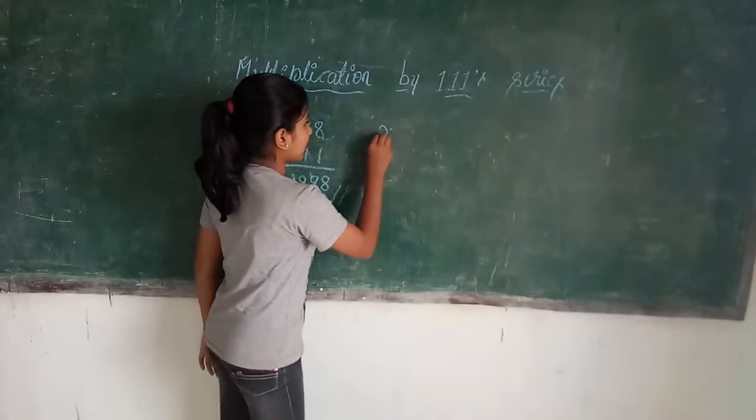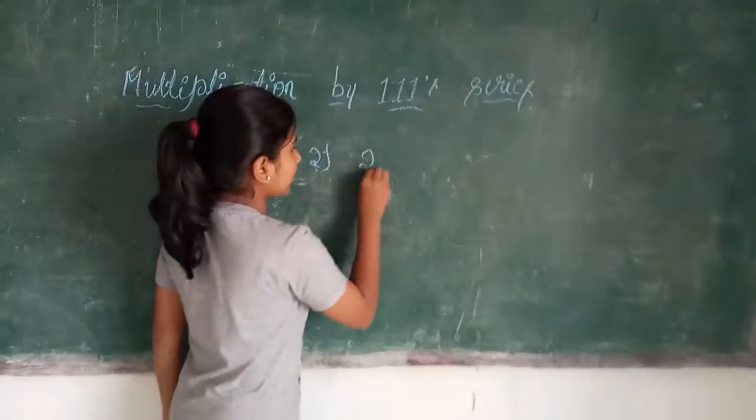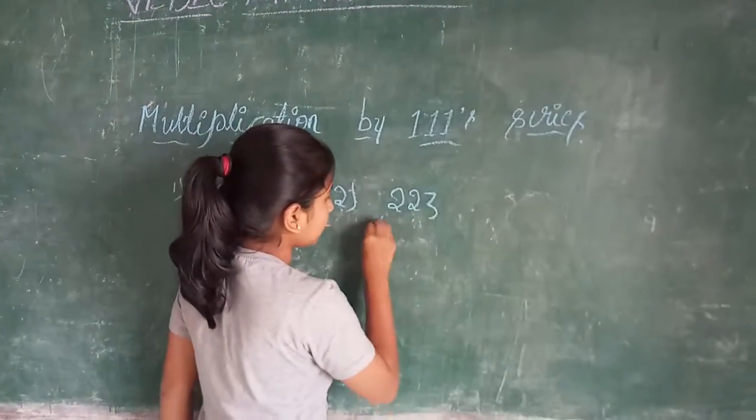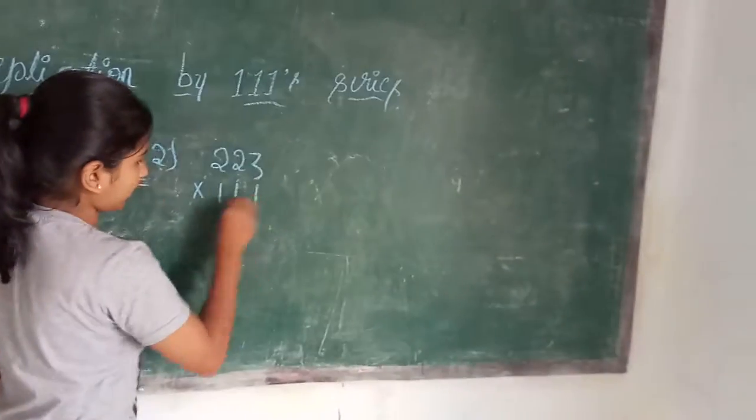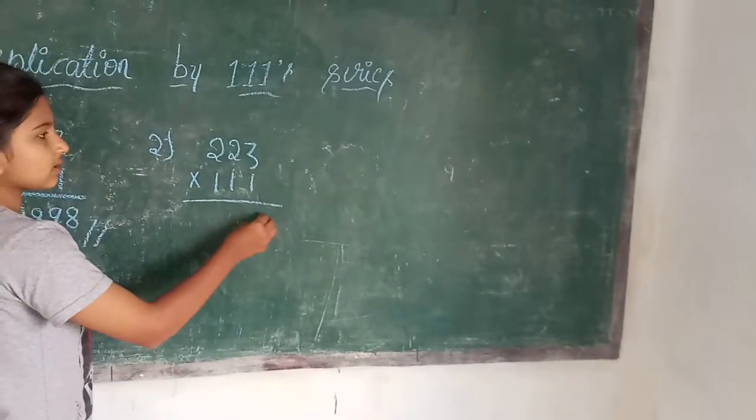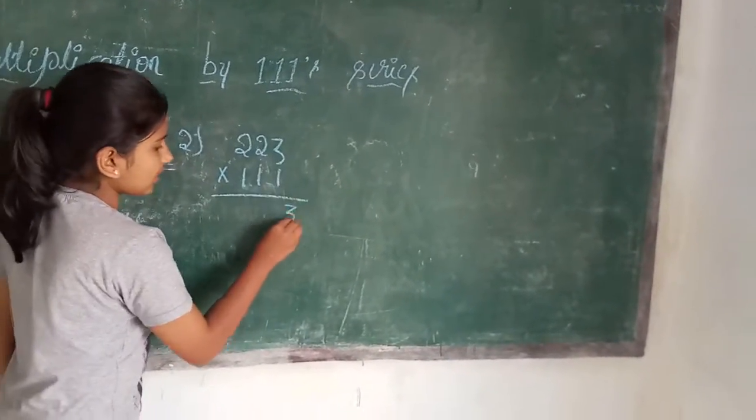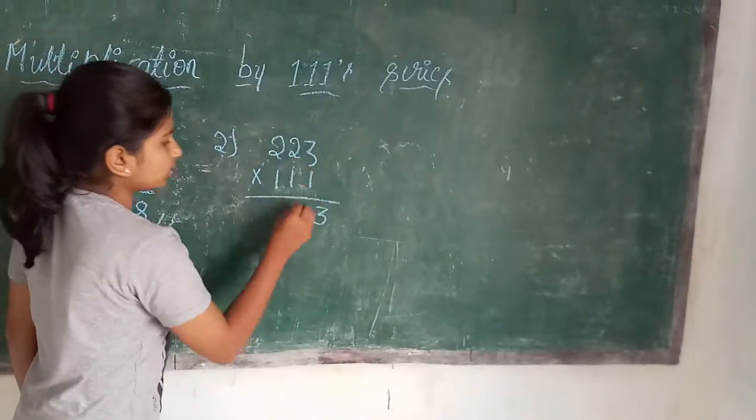Next, I will take the second example. 223 into 111. To find the last digit, I will write 3 as it is. Now I will write 3 plus 2 is 5.